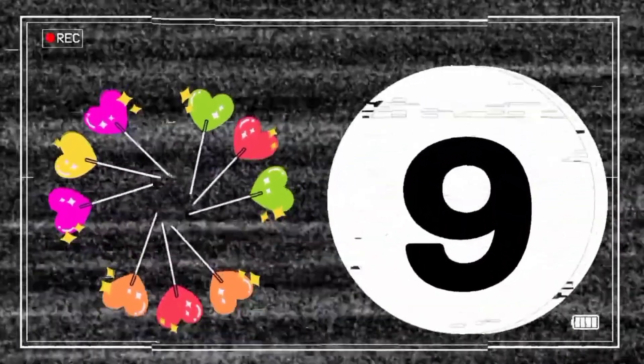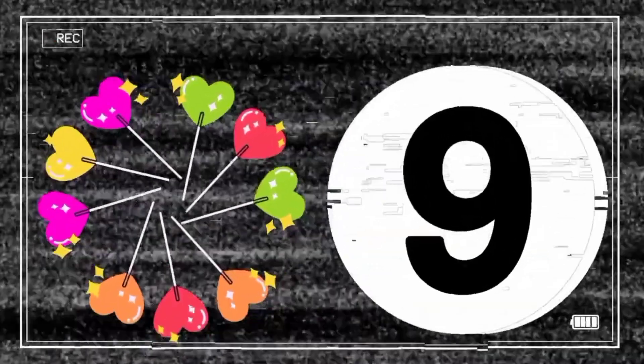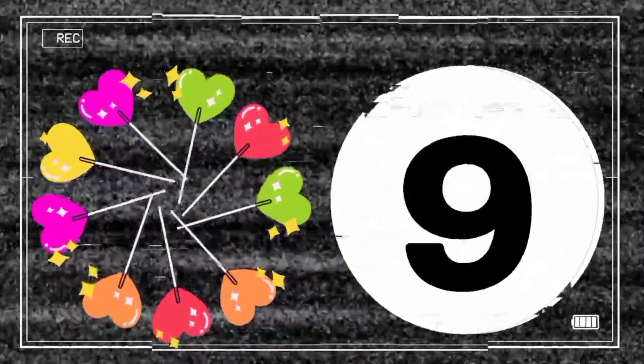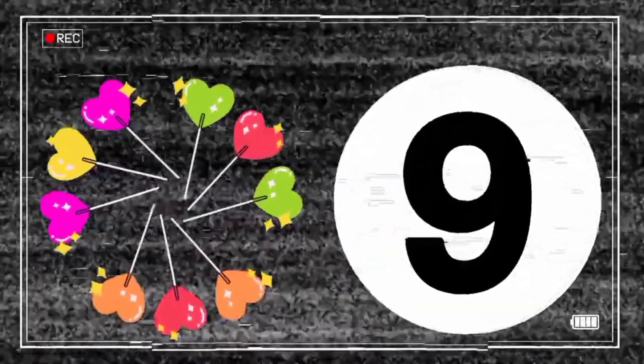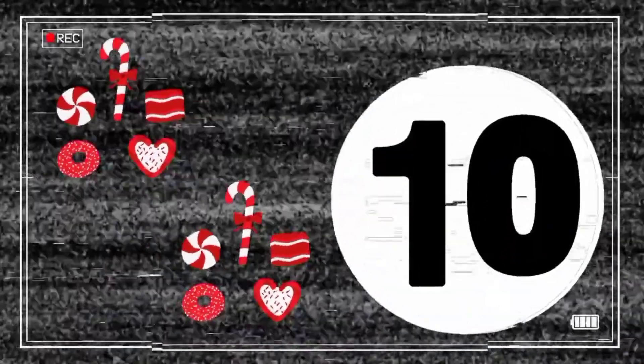1, 2, 3, 4, 5, 6, 7, 8, 9 — 9 candies. 1, 2, 3, 4, 5, 6, 7, 8, 9, 10 — 10 candies.